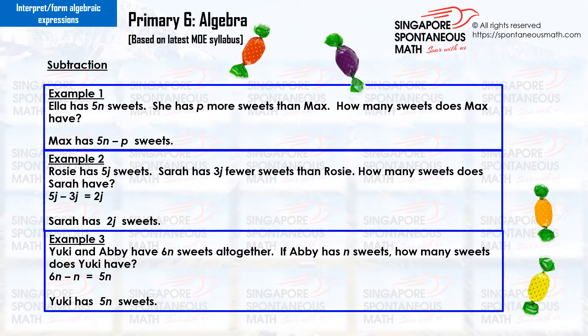Subtraction expressions with algebra. Example 1. Ella has five n sweets. She has p more sweets than Max. How many sweets does Max have? Max has five n minus p sweets.